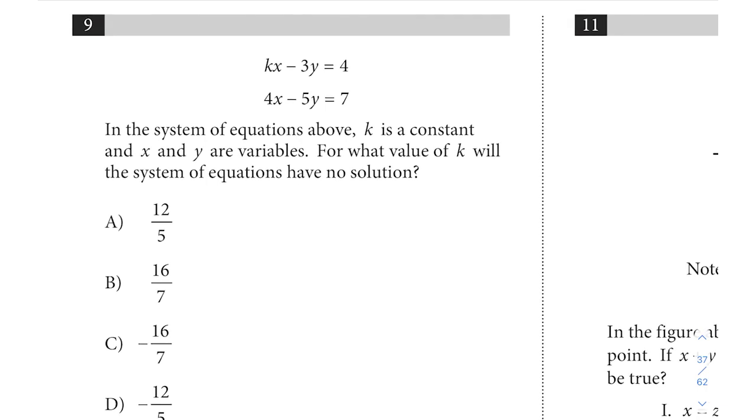This shows us a system of equations and the question reads: In the system of equations above, k is a constant and x and y are variables. For what value of k will the system of equations have no solution?